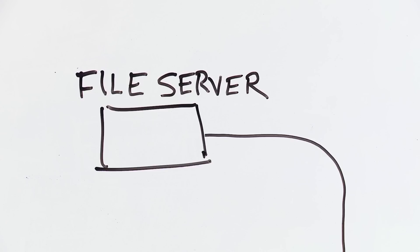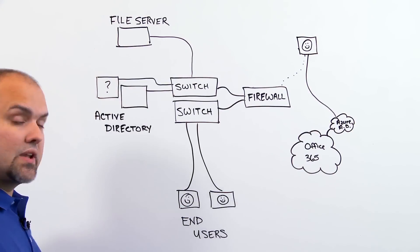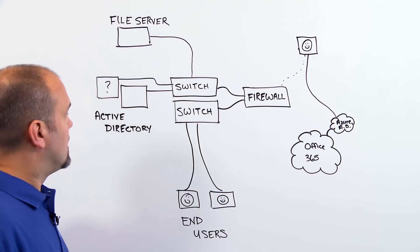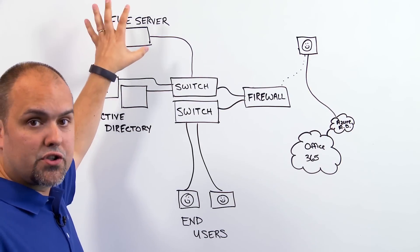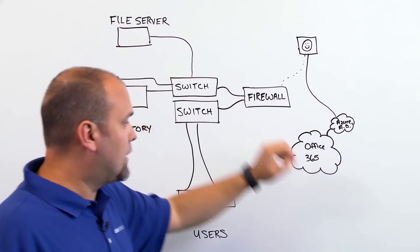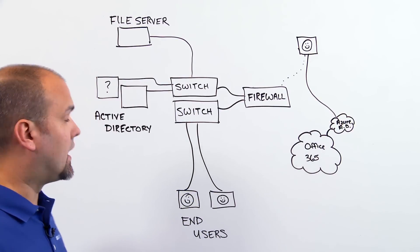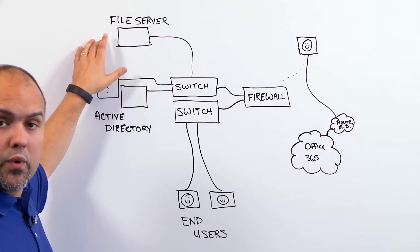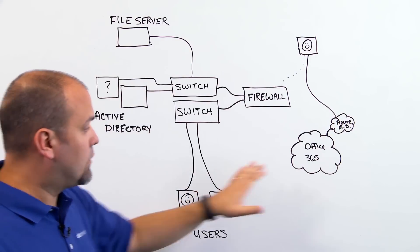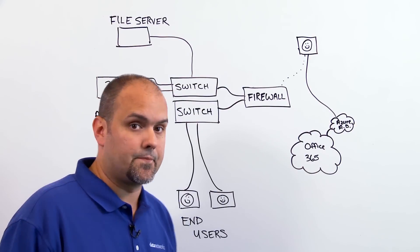So how do we do that? Let's start with our file server. As you notice, we've only got one listed here. What we've done is taken all of our shared files and moved them to SharePoint Online in Office 365. Then we've taken all of our users' home drives and moved those to OneDrive for Business in Office 365.